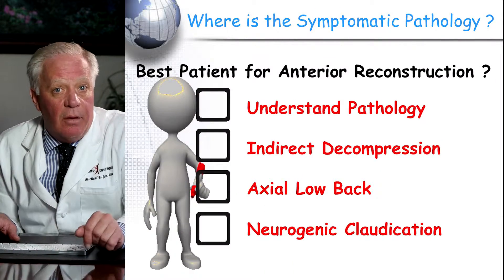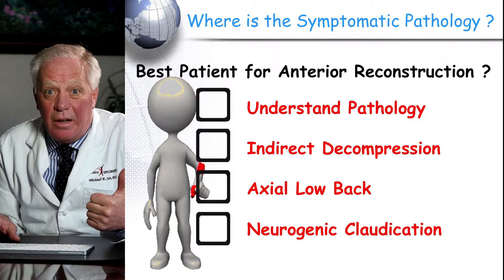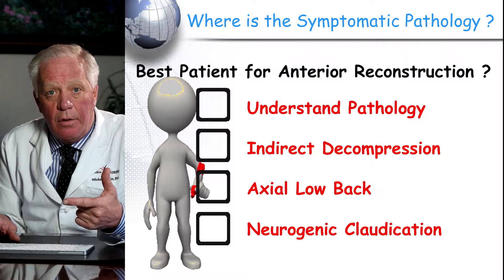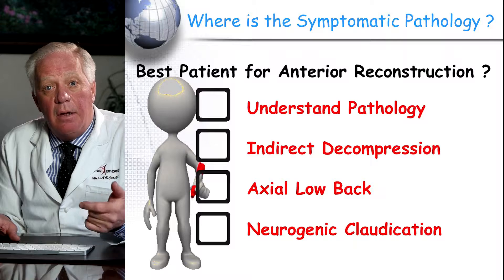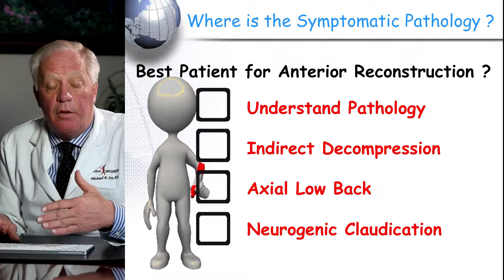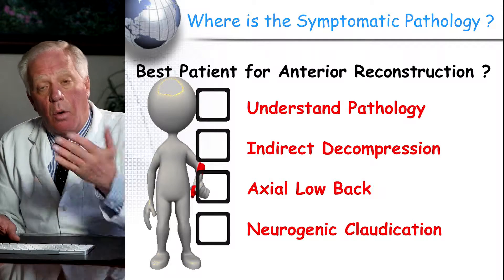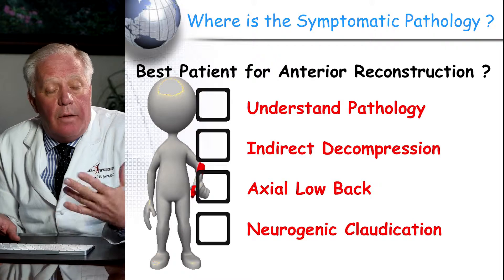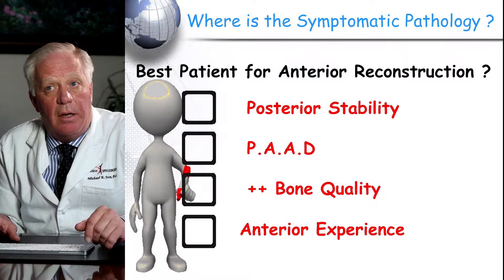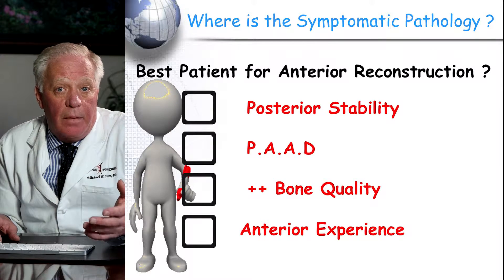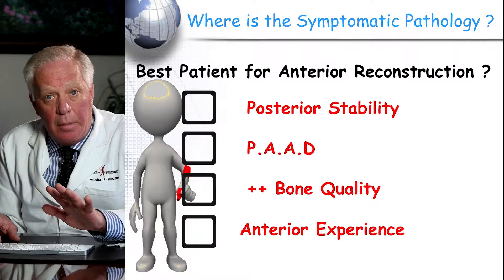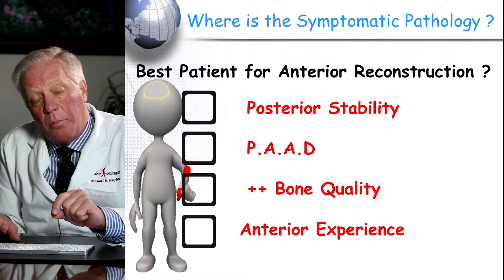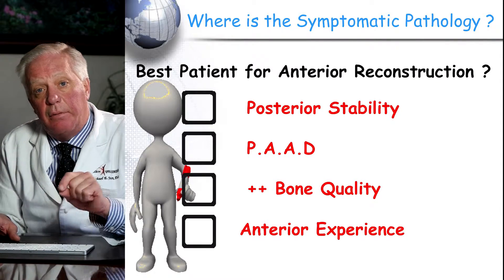Which patients are best for this type of technology? The surgeon must first understand the pathology: is it degenerative disc disease, degenerative spondylolisthesis, spinal stenosis, scoliosis, or a combination? Does the patient need direct or indirect decompression? Do they need a fusion or disc replacement for severe back pain, or are they suffering from neurogenic claudication — only able to walk so far before terrible leg pain, or needing a shopping cart at the grocery store? The best candidates at our center are those with a stable back, a painful anteriorly accessible disc, good bone quality, and anatomy accessible from the front.